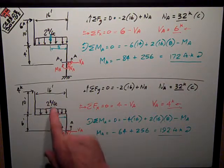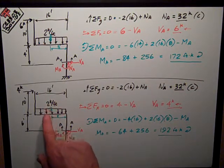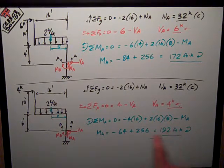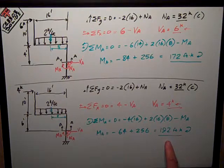Sixteen times two gives me the force, times eight is the moment arm, minus MA. Do the math. MA is equal to one hundred ninety-two foot kips. Thank you.